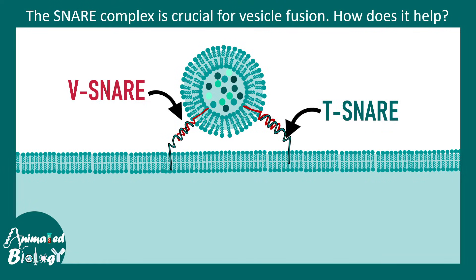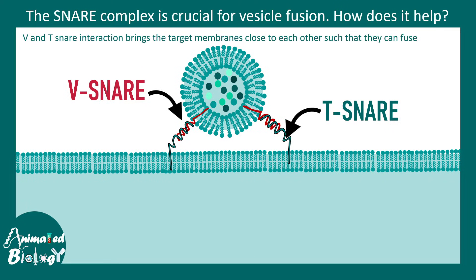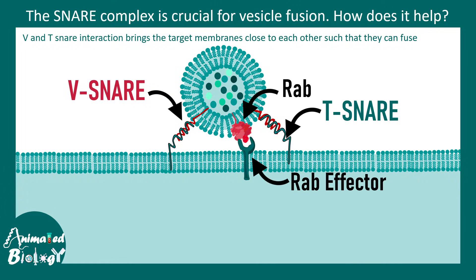At the target membrane there would be T-SNAREs which interact with each other. There are also other components that help in this fusion and targeting process. There are certain GTP-bound small G-protein molecules known as RABs that help in tethering, docking, and sorting of specific vesicles towards a particular membrane. Specific receptors known as RAB effectors are present on the target membrane. RAB and RAB effectors are like molecular matchmakers — they determine the specificity of vesicle fusion to a particular membrane.